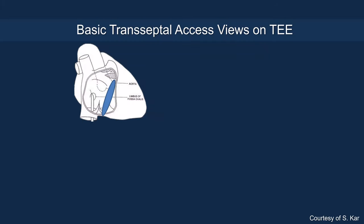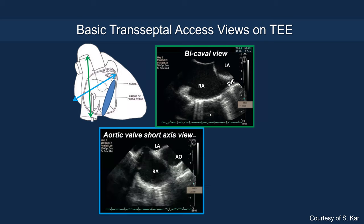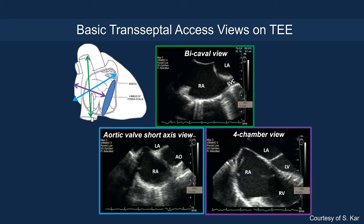There are a number of basic transeptal access views on TEE. The first is the bicaval view, where you see the SVC on the right side of the screen and the IVC on the lower left, and you want to see the tenting on the interatrial septum. Then there is the aortic valve short-axis view, where you want to see the tenting between the right atrium and left atrium as posterior as possible. The four-chamber view is used to measure the height from the interatrial septum puncture tenting area to the mitral annulus to determine whether you have sufficient height.